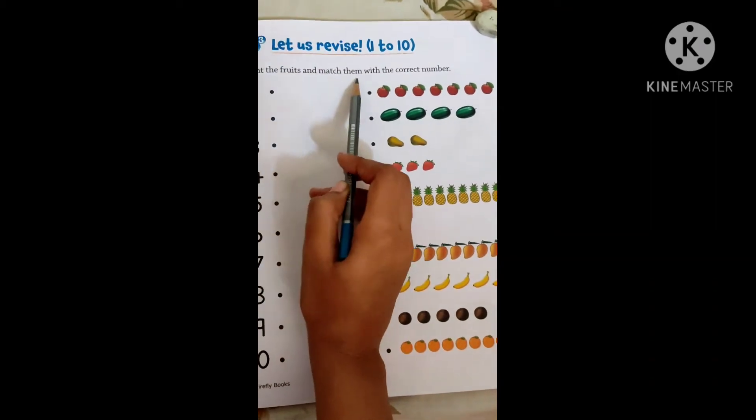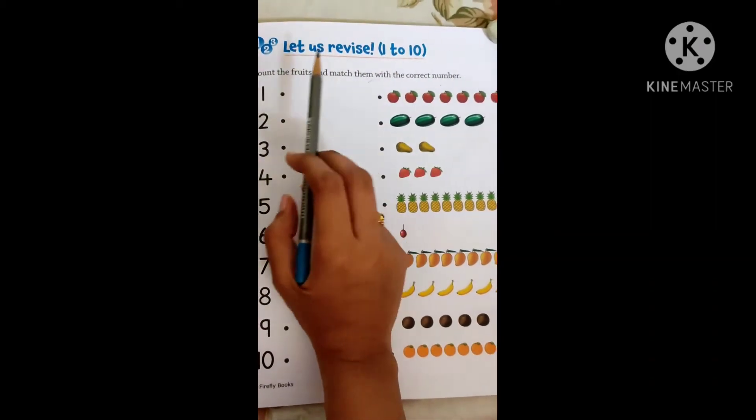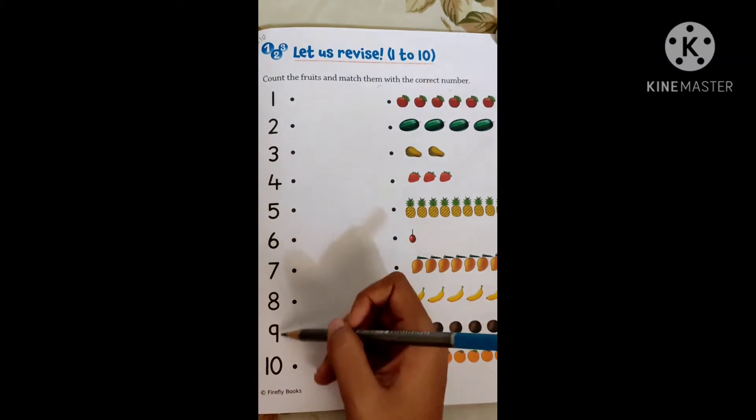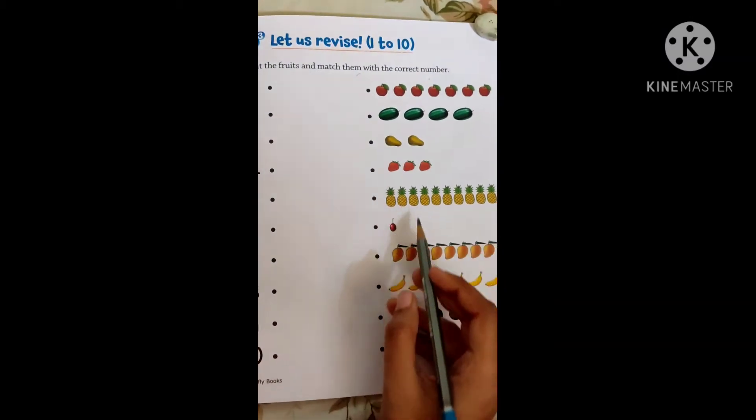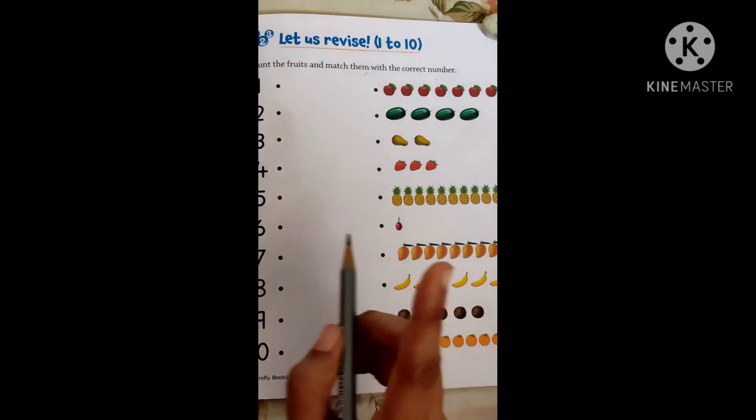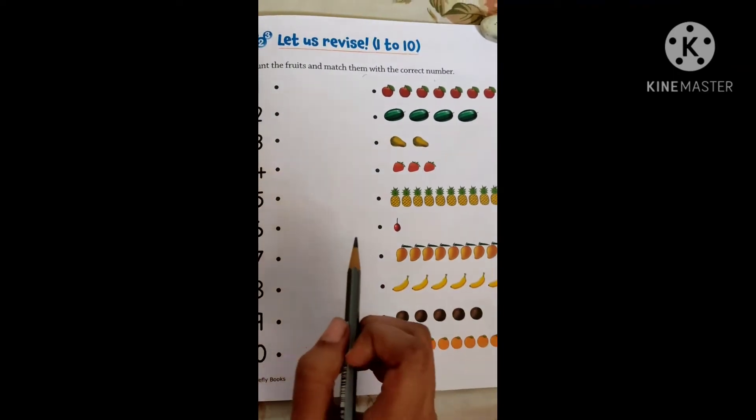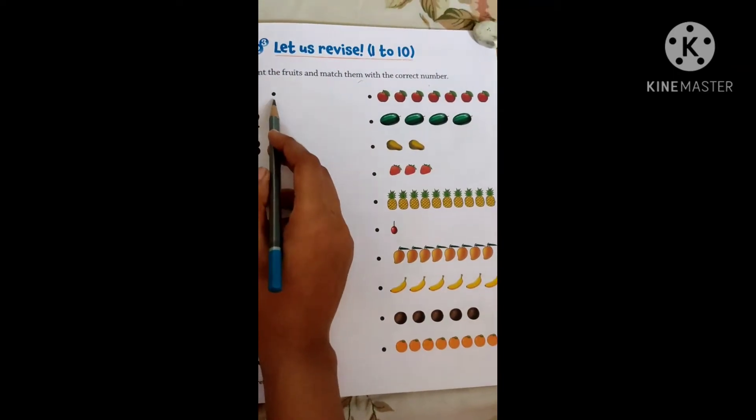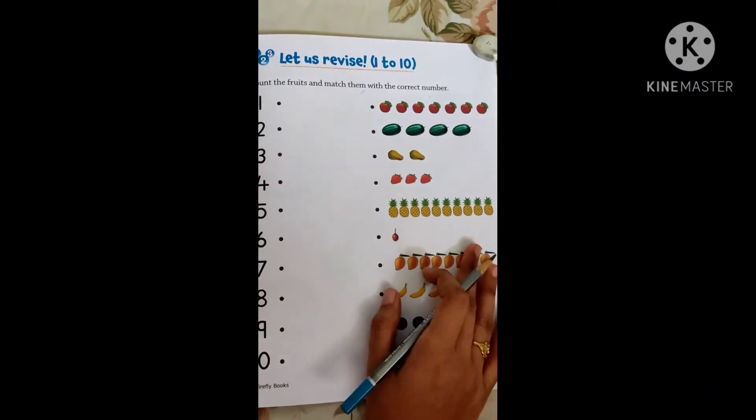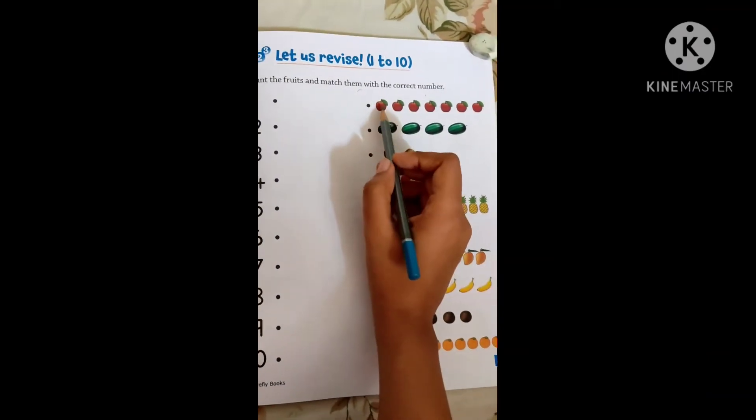Count the fruits and match them with the correct numbers. Now what we have to do? We have to see the numbers they have given and here the fruits are given. We have to count the fruits and then we have to match it. Now we will go number-wise, or you want to go like this? That is up to you. So let us do like this.